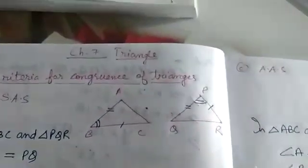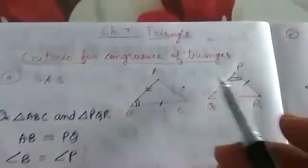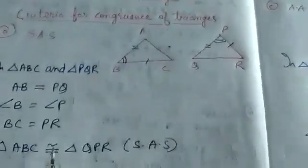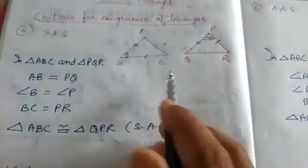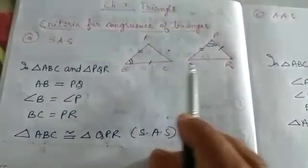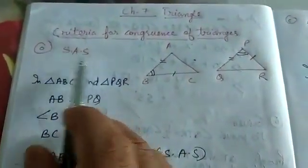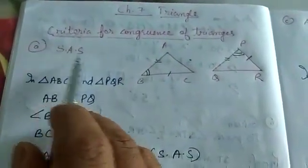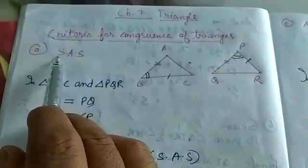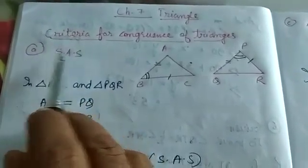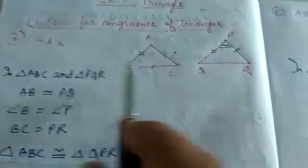Before studying the exercise, one more part is there: congruency. We will see under what criteria two triangles are said to be congruent. The first criterion is Side-Angle-Side (SAS), where S represents side and A represents angle.